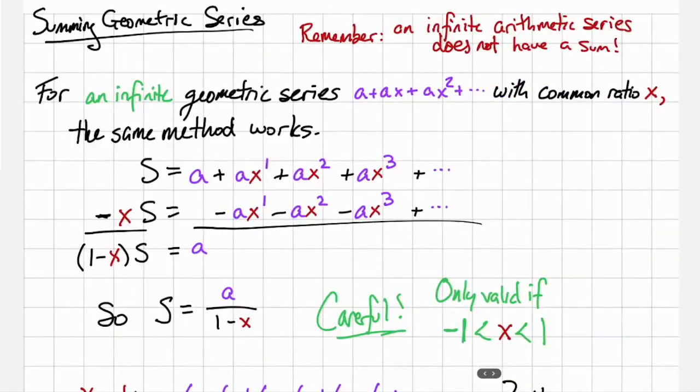So now that's a finite geometric series. What about an infinite geometric series? Remember, when you have an infinite arithmetic series, it does not have a sum. What about a geometric series? An infinite geometric series can always be written a + ax + ax squared + dot dot dot with that common ratio x. We can use the same method we used before to find S and take away the xS to get (1 - x) times S is equal to a because all of the other terms cancel out. So this sum is equal to a, that first term, divided by 1 minus the common ratio.